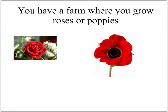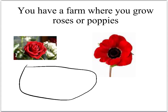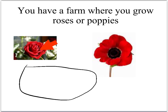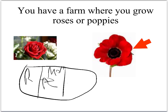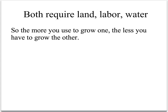You have a farm, so you have a certain amount of land. On that land, you can grow roses, or you can grow poppies. You can grow roses because they're beautiful and your girlfriends love them. Poppies because you want to get stoned out of your mind, or maybe sell it to other people. You have a certain amount of land that you allocate to roses and a certain amount to poppies. The more land you have for roses, the more roses — and fewer poppies. This is represented with the production possibility frontier, which will look something like this.